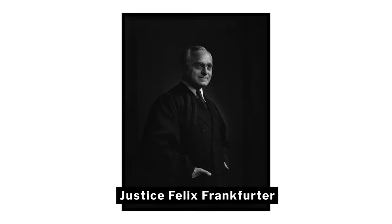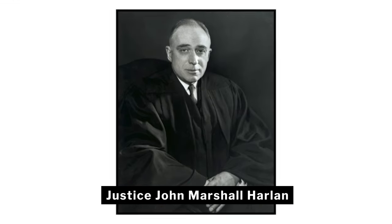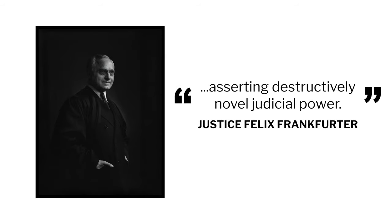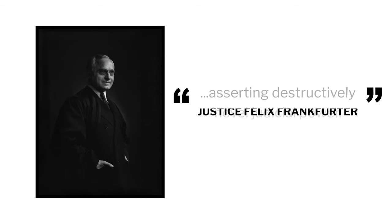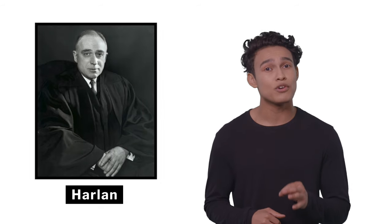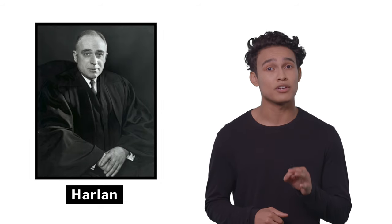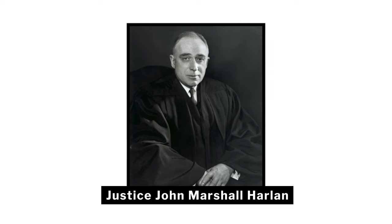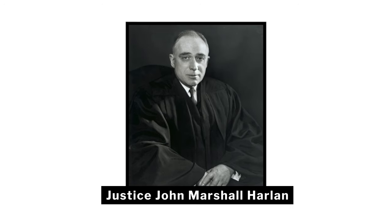Justices Felix Frankfurter and John Marshall Harlan dissented. Frankfurter argued that the court's decision violated the separation of powers between legislatures and courts and that the court was asserting destructively novel judicial power. Justice Harlan argued that there was no federal constitutional requirement that the vote of every voter achieve perfect equality, further stating that mathematical equality among voters was simply impossible to achieve.